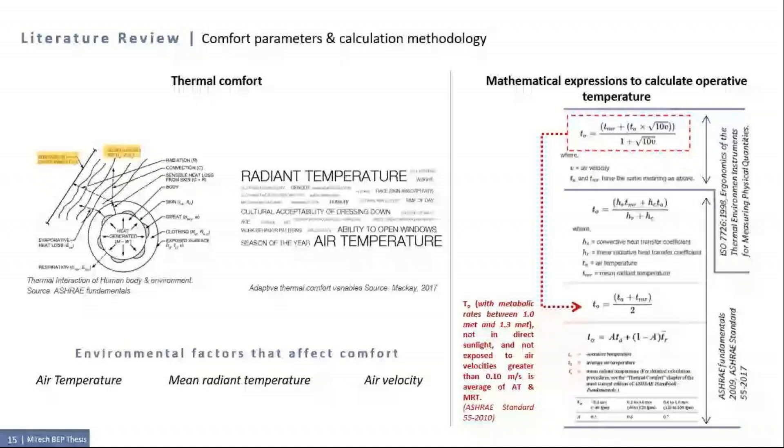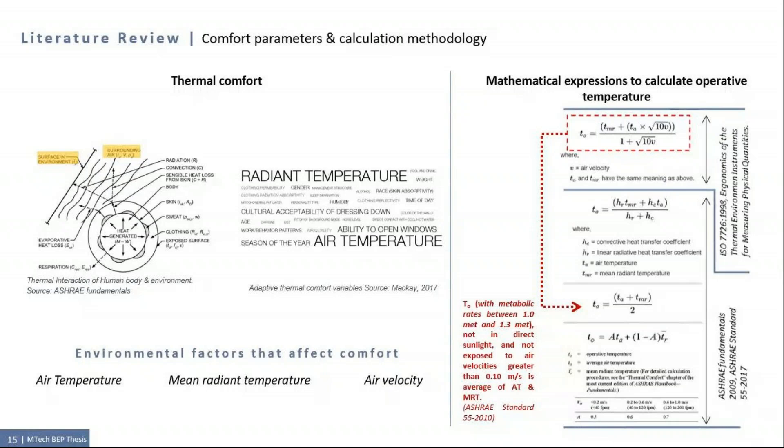There are many methods for calculating operative temperature as can be seen in the figure on the right. But this thesis focuses on the formula as mentioned in ISO 7726 Ergonomics of Thermal Environment Instruments for Measuring Physical Quantities. The reason for this formula mentioned in ISO standard is that it explicitly considers the impact of air velocity in operative temperature. The formula also reduces to the average of air temperature and mean radiant temperature for the cases where air velocity is less than 0.1 meter per second as mentioned in the ASHRAE standards.